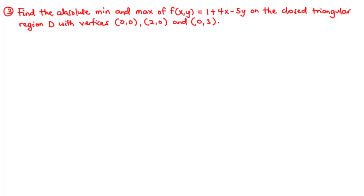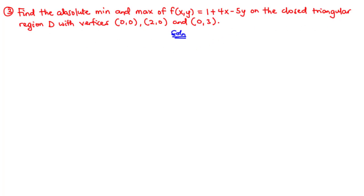Let's take example 3. In this example, we are going to find the absolute minimum and maximum of the function f(x,y) on the closed triangular region with vertices (0,0), (2,0), and (0,3). The first thing we need to do is to find the critical point of this function and then make sure that the critical point is found in this closed triangular region.